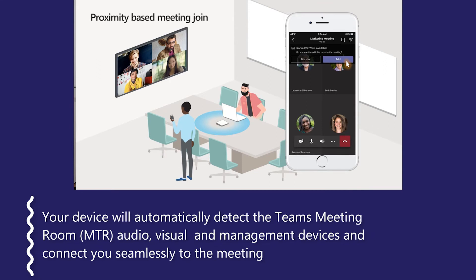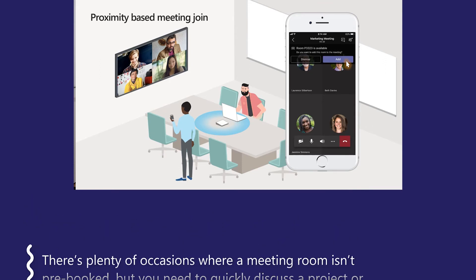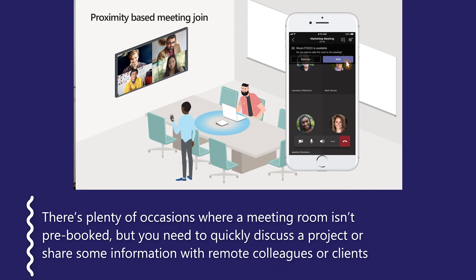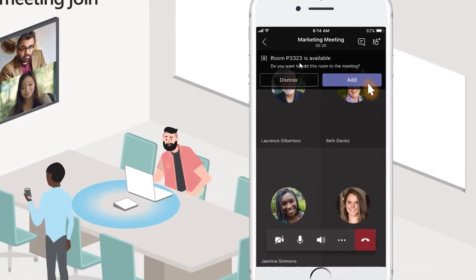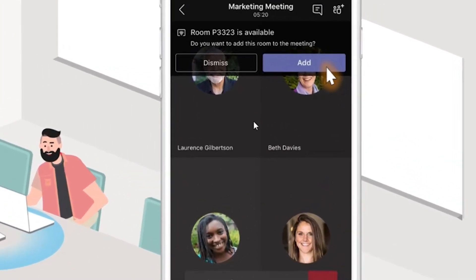Now if there's an MTR nearby, it'll automatically send out a Bluetooth beacon assuming there's no meeting booked in it. And your phone will pick that up and it will say to you, 'Hey, room XYZ is free — would you like to add this room to your meeting?' And you have the ability to hit the add button directly from your phone and it will seamlessly transfer the meeting from your device into the meeting room.